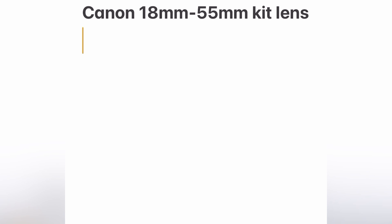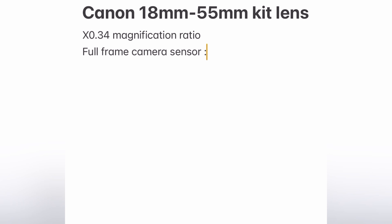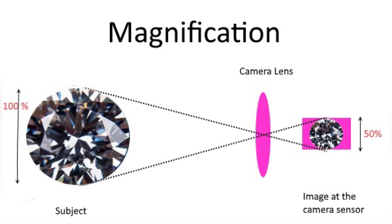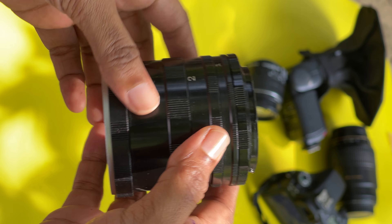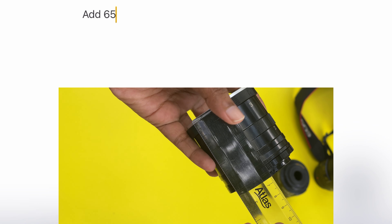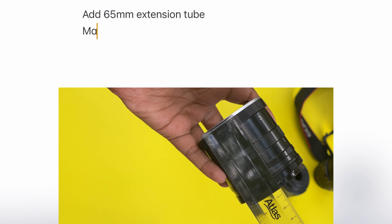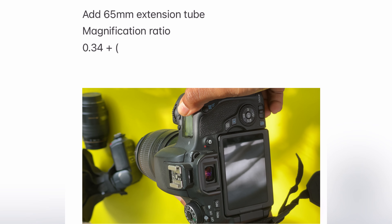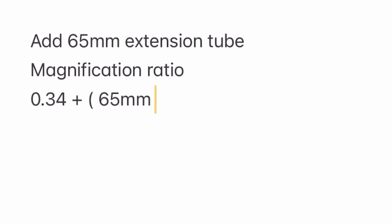This Canon 18-55mm kit lens shows the height of the magnification ratio. This is the hand-held photo camera sensor. The magnification ratio is attached to the kit lens. The extension tube is 65mm. The magnification ratio is calculated by dividing the extension tube length by the focal length.